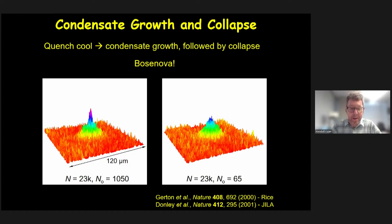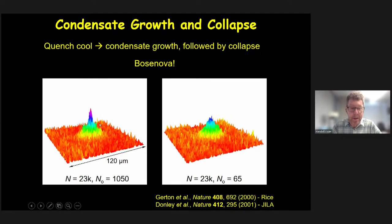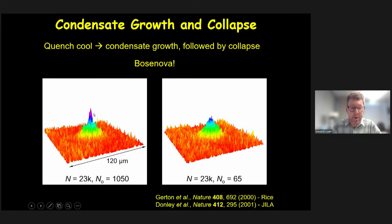These images on the left show a Bose condensate emerging from the cloud of thermal atoms, and if it gets overfilled to the point where it becomes unstable to collapse, then that condensate suddenly disappears. We see this alternating cycle of growth, followed by collapse of the condensate, which some people have called the Bose nova.